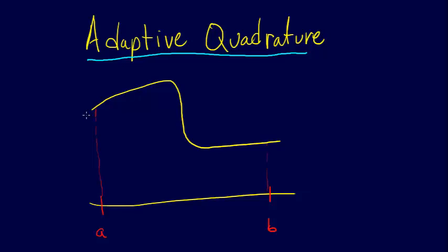So we have this function that is relatively unchanging for a period of time, and then it changes rapidly, and then it doesn't change again.